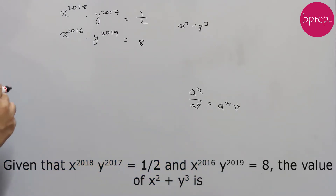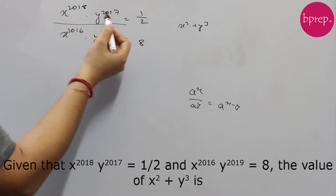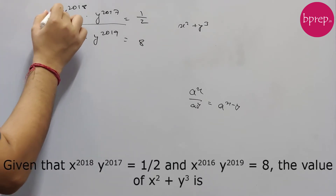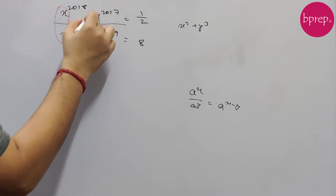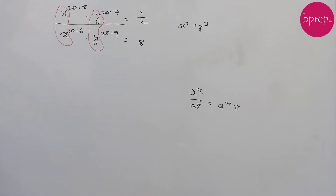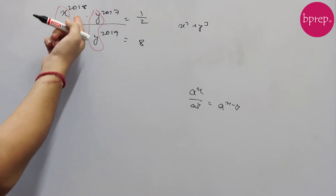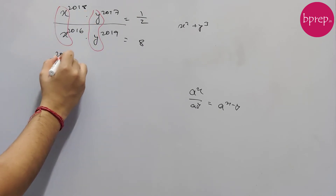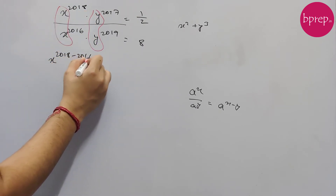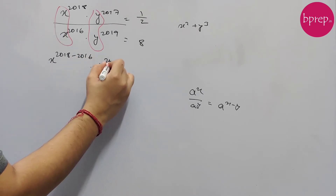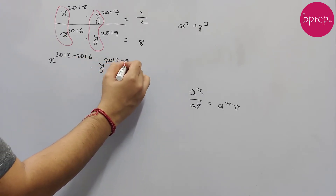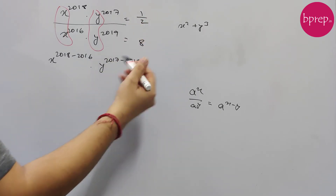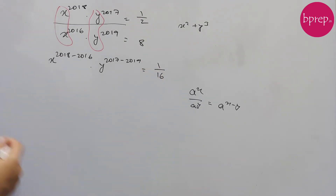Applying that concept, we divide equation 1 by equation 2. We have two bases, x and y, so we can subtract their respective powers. Dividing equation 1 by equation 2 gives us x to the power (2018 minus 2016) times y to the power (2017 minus 2019), which equals (1/2) divided by 8 = 1/16.